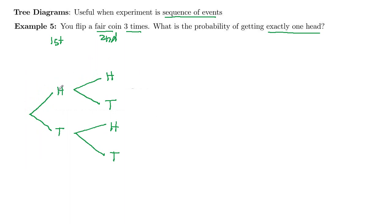So if I get heads on the first, heads on the second, then I could get heads or tails on the third. If I get heads on the first, tails on the second, I could get heads or tails on the third. If I get tails on both the first two flips, I could get heads or tails on the third.